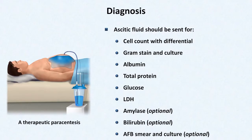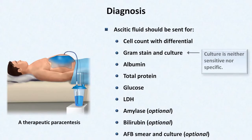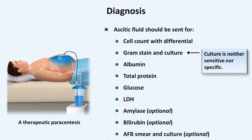When SBP was originally described back in the 1960s, it was common for clinicians to treat the culture as a gold standard — if the culture was negative, the patient was deemed not to have SBP and antibiotics were stopped. However, we now know that ascitic fluid cultures are neither sensitive nor specific. The poor sensitivity is due to the relatively low concentration of bacteria in the ascites. This can be partially overcome by directly inoculating blood culture bottles with at least 10 mL of ascites fluid at the time of the procedure, instead of using a standard sterile specimen container.